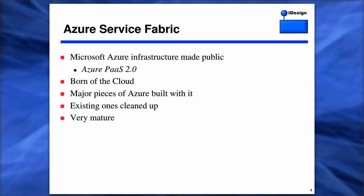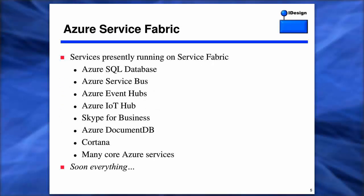In a nutshell, the fabric is basically Azure infrastructure made public. It's what Microsoft is calling Azure Path 2.0. It's very mature — there are already major pieces of Azure built on top of it, many existing ones cleaned up, and of course it's been born of the cloud so that it actually supports future needs. This is just a small list of things built on top of the fabric today: Azure SQL, the bus, event hubs. If you think of something as large as Azure SQL built on top of the fabric, you're talking about mature technology supporting 100K-plus instances of SQL databases. As they roll out past 2.0, soon everything will be built on top of it.